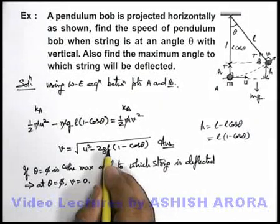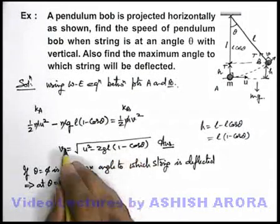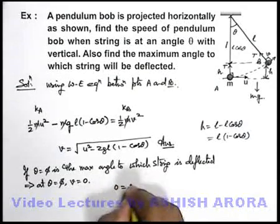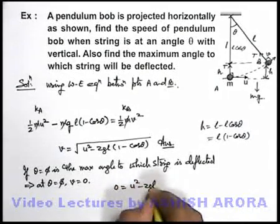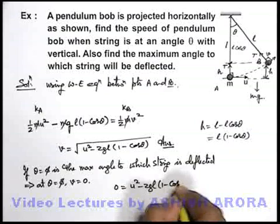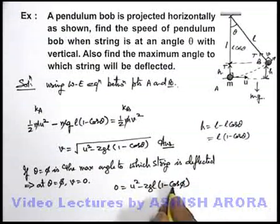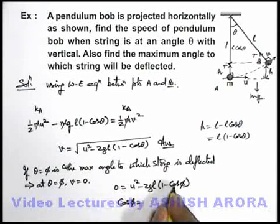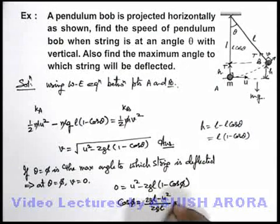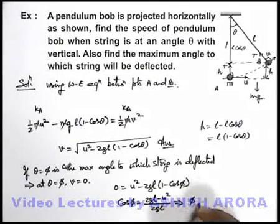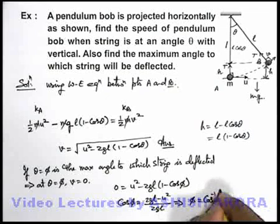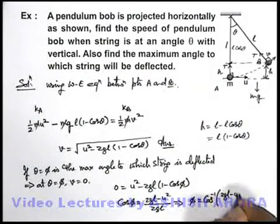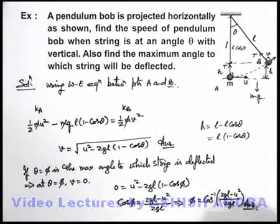Now from this equation we can use at theta equal to phi, v is equal to zero. It will give us zero is equal to u squared minus 2gl one minus cos phi. If we simplify this relation here you can see the value of cos phi we are getting is 2gl minus u squared upon 2gl. Or the maximum angle to which the string is deflected can be written as cos inverse of 2gl minus u squared upon 2gl. This is the answer to second part of this problem.